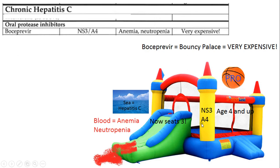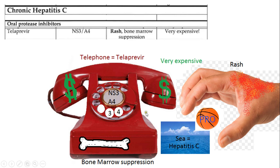This next drug is telaprevir, another oral protease inhibitor for hepatitis C. The 'pro' reminds you it's a protease inhibitor. He wants to go to the sea but needs money, so he should be a pro basketball player. He's going to call his agent on the telephone — 'tela' for telephone — for telaprevir. The numbers on the phone dial include three and four to help remember NS3/4A. Unfortunately, he can't become a pro basketball player because he has a really bad rash and bone marrow suppression.